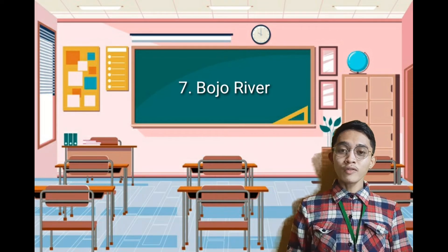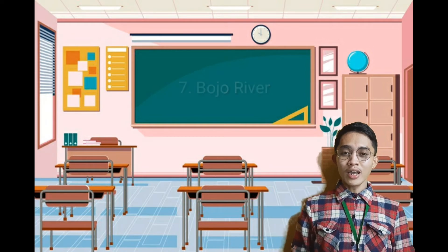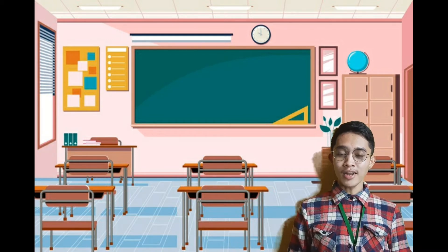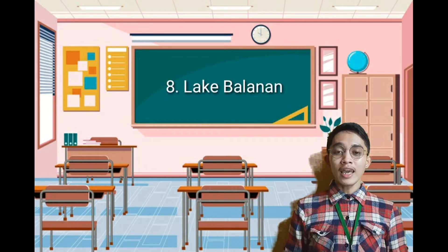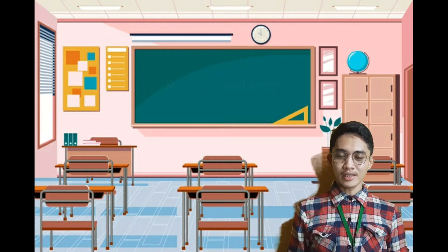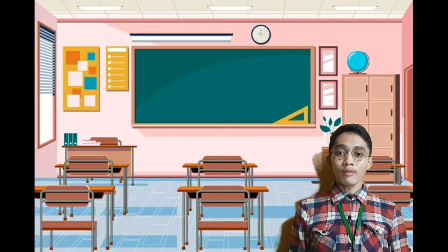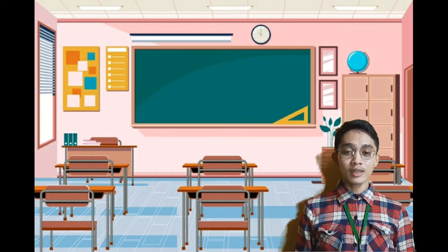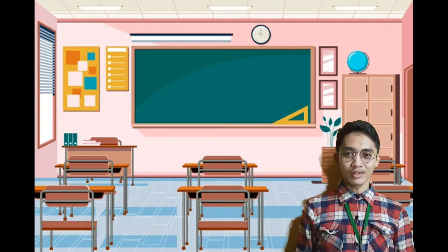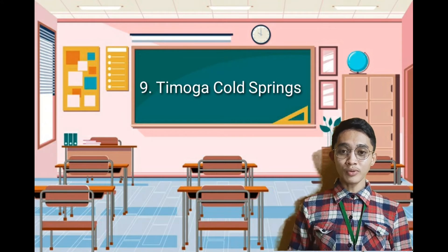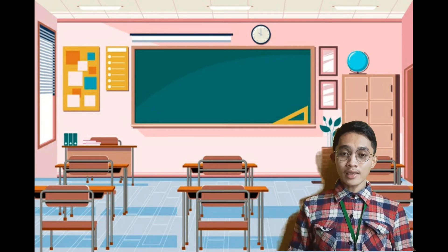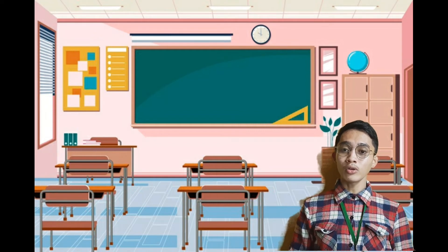Number seven is Bojo River, one of the most popular attractions in Aloguinsan, Cebu. You will not only find fun here but also see how beautiful the environment is. Number eight is Lake Balanan, a lake in Siaton, Negros Oriental. It is a freshwater lake in the forested mountain — a beautiful place with a sweet mountain breeze. Number nine is Timoga Cold Springs, a group of springs located in Iligan City. This is a perfect place to relax and you can bring your family or friends.